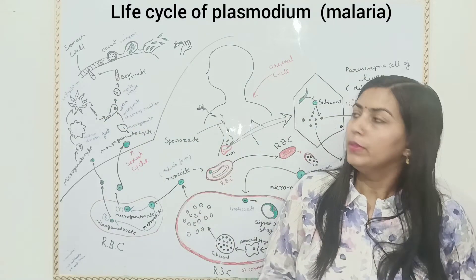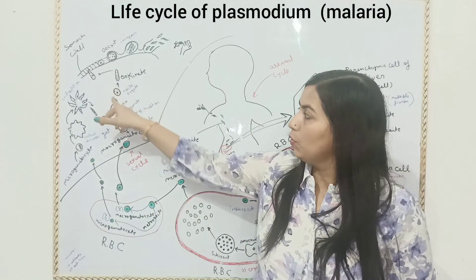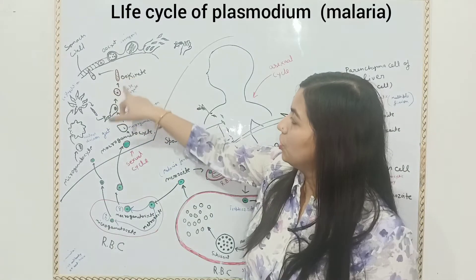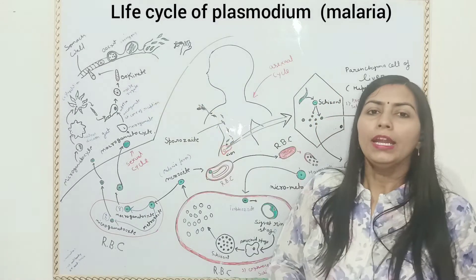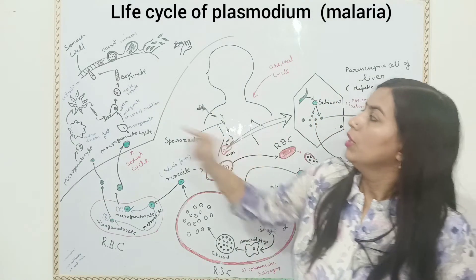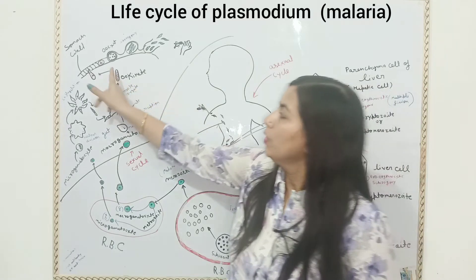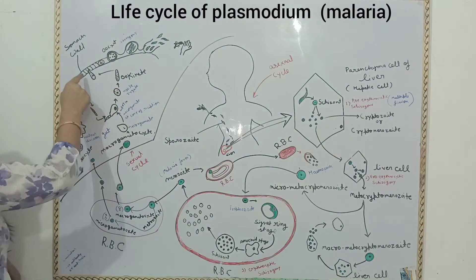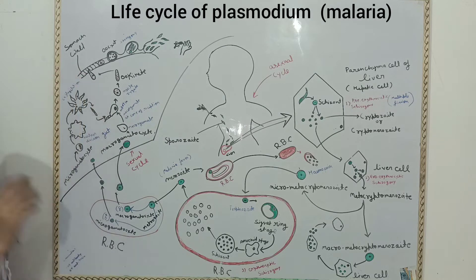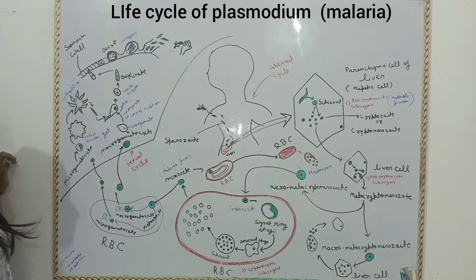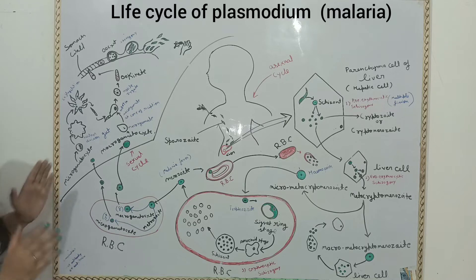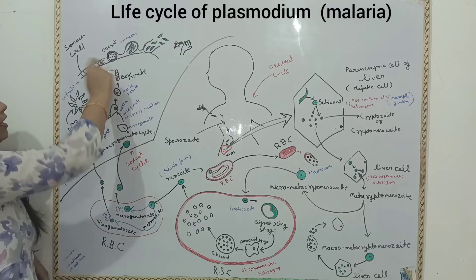When the sperm and Macrogametocyte fuse, formation of a zygote takes place. This zygote is immotile. After some time, changes in the structure of the zygote take place and it changes into a motile-formed structure, which is known as ookinete. Ookinete is the motile state. Since it is motile, it moves into the stomach wall of the female Anopheles mosquito. When it enters the stomach wall, after some time it changes its structure and forms a cyst, called an oocyst.